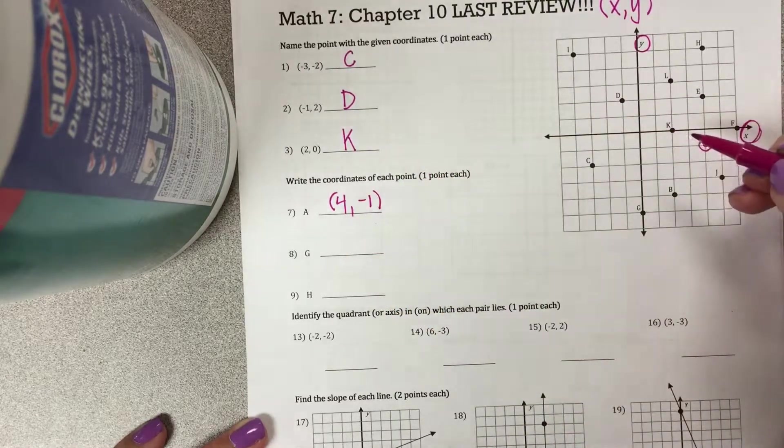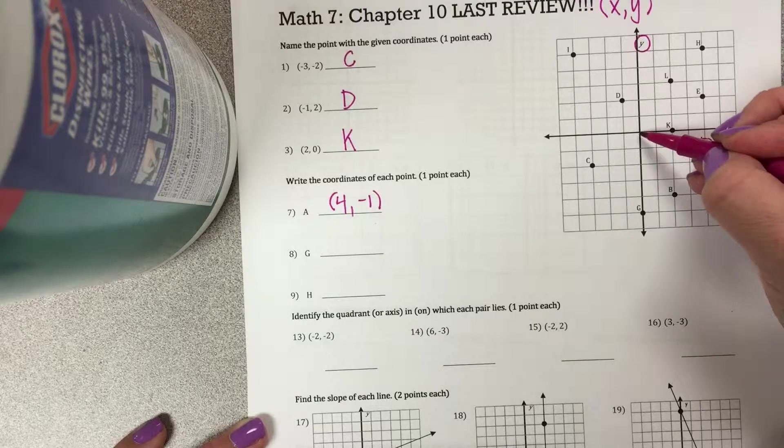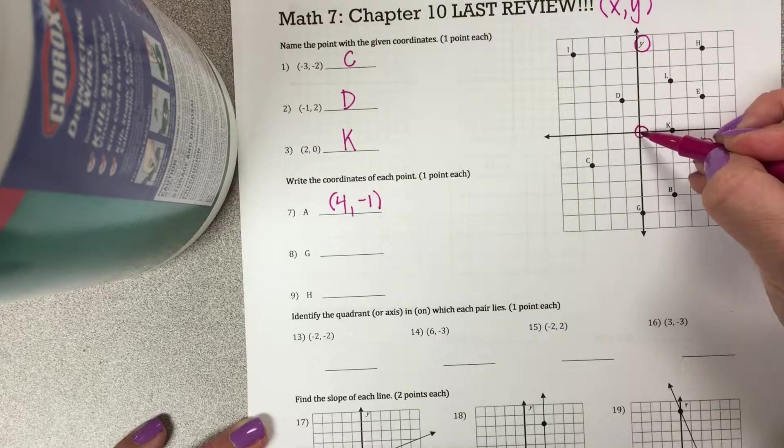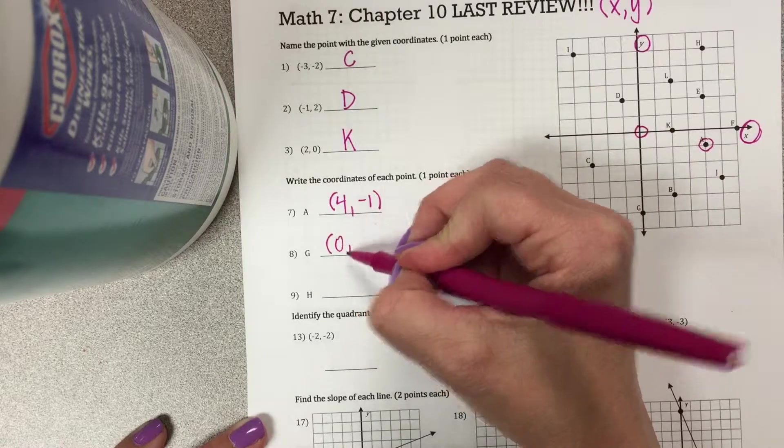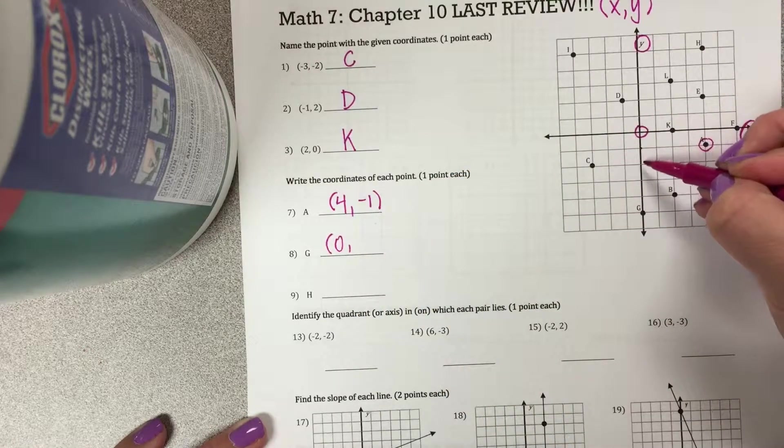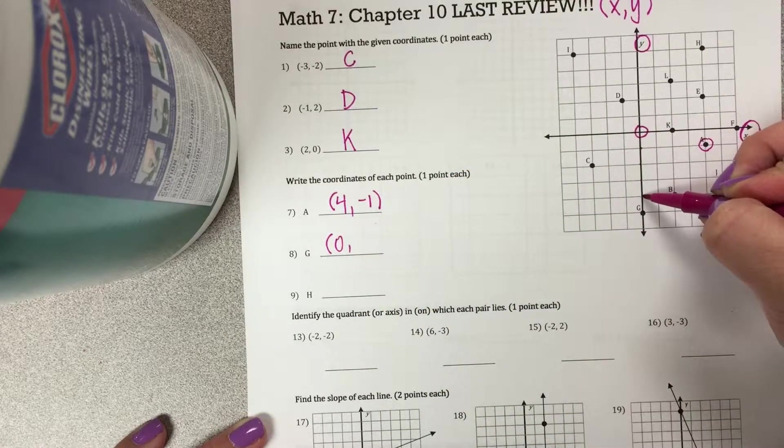For G, on my X-axis I'm at 0, right? I'm not moving over at all, so I'm just here in the middle at 0. And on my Y, I'm at negative 1, negative 2, negative 3, negative 4, negative 5.